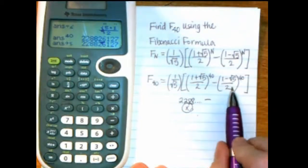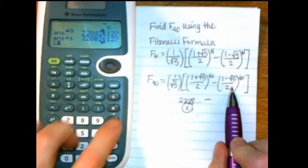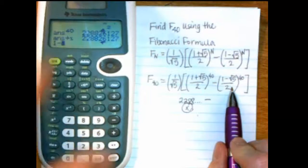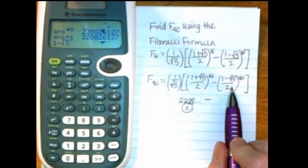And then minus, now this one, I'll do 1 minus the square root of 5, enter.